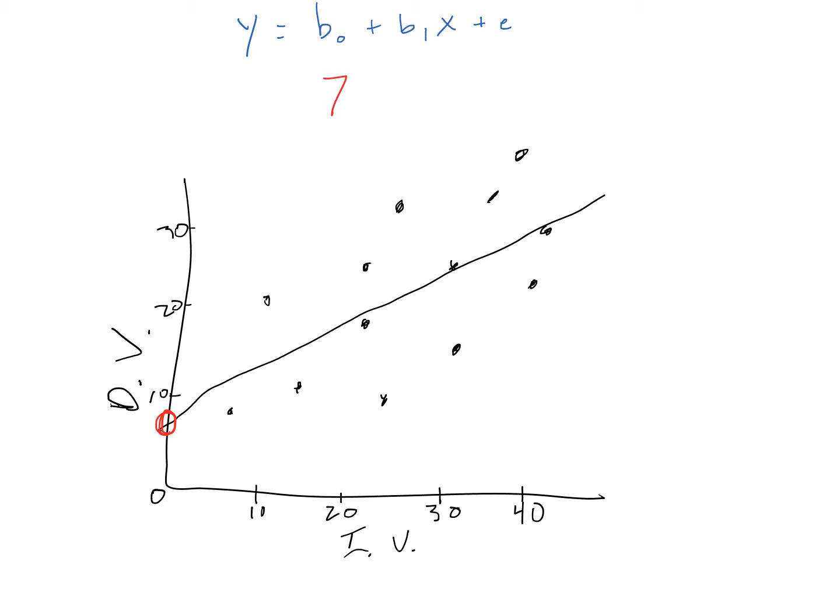Let's work through an example. Say that our y-intercept, as shown here, is about 7, so our value for beta 0 is 7. Then, say for every 1 unit increase in our independent variable on the x-axis, there is a 0.75 unit increase in our dependent variable on the y-axis. So our slope, or beta 1, is 0.75. To predict anyone's value for the dependent variable, we would use the equation shown here in red. We would start with the intercept and add the person's value for the independent variable times the slope. The error term simply acknowledges that this prediction will not be perfect, because people do not fall directly on the line. The smaller the error term, the closer the actual data fit to the line.